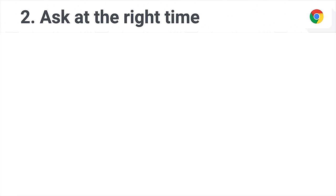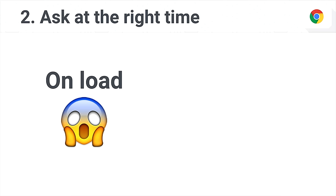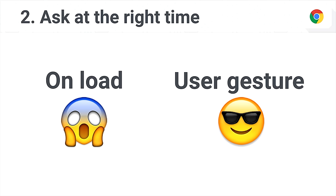The second principle is ask at the right time. The absolute worst time to ask for permission is on load — and you don't have to do that anymore. The permissions API allows you to query permission state at any time, so let's just stop doing this. Better practice is to ask on user gesture — if you give the user an affordance indicating they want to use an API, that's the right time to ask. In my example, for notifications, I use the toggle switch as that user gesture indicating a user wants notifications.